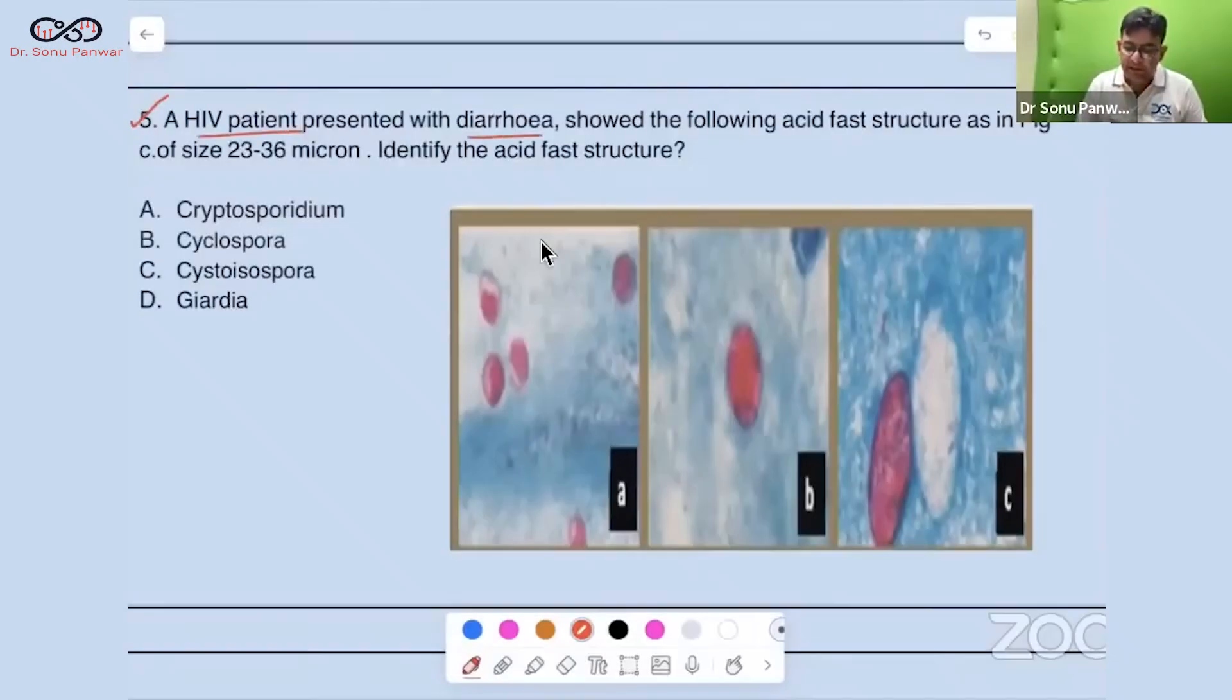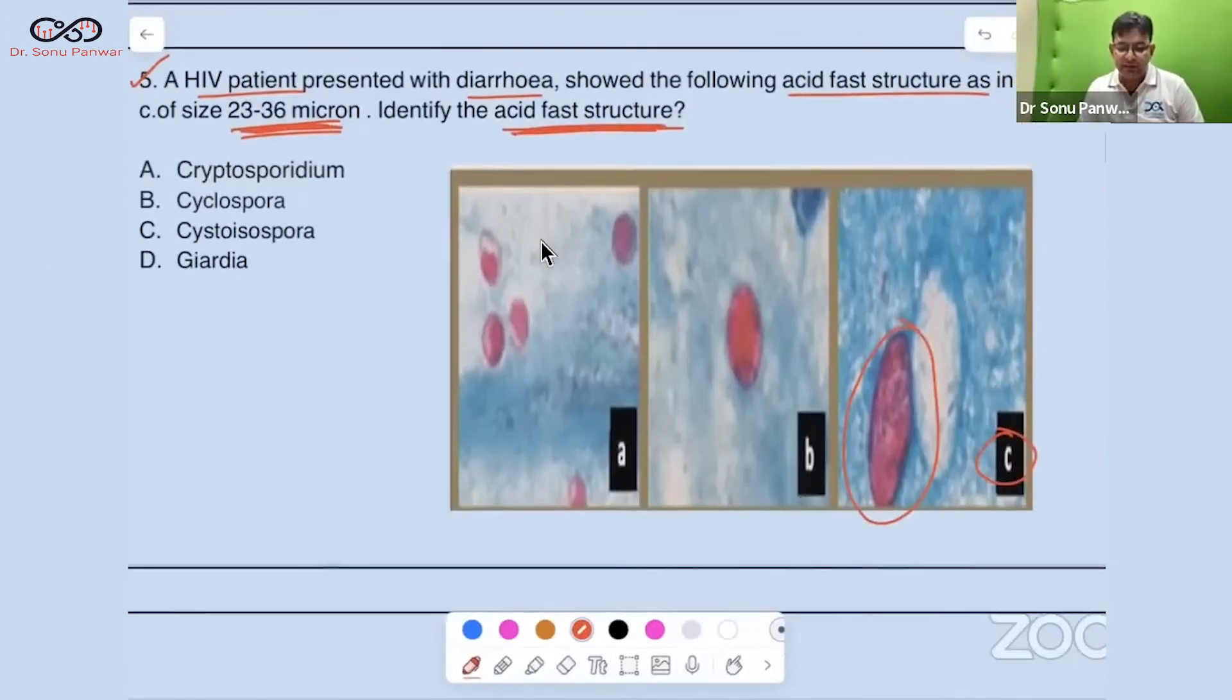The HIV patient presented with diarrhea showed the following acid fast structure of the size of 23 to 36 micron. Identify the acid fast structure. So this particular one in the figure C, they want to ask regarding this particular size, 20 to 36 micron. They want to ask this acid fast structure is of which organism? Answer is C, that is Cystoisospora belli. The new name of Isospora belli is Cystoisospora belli. The size is 23 to 36 micron, the highest size here.